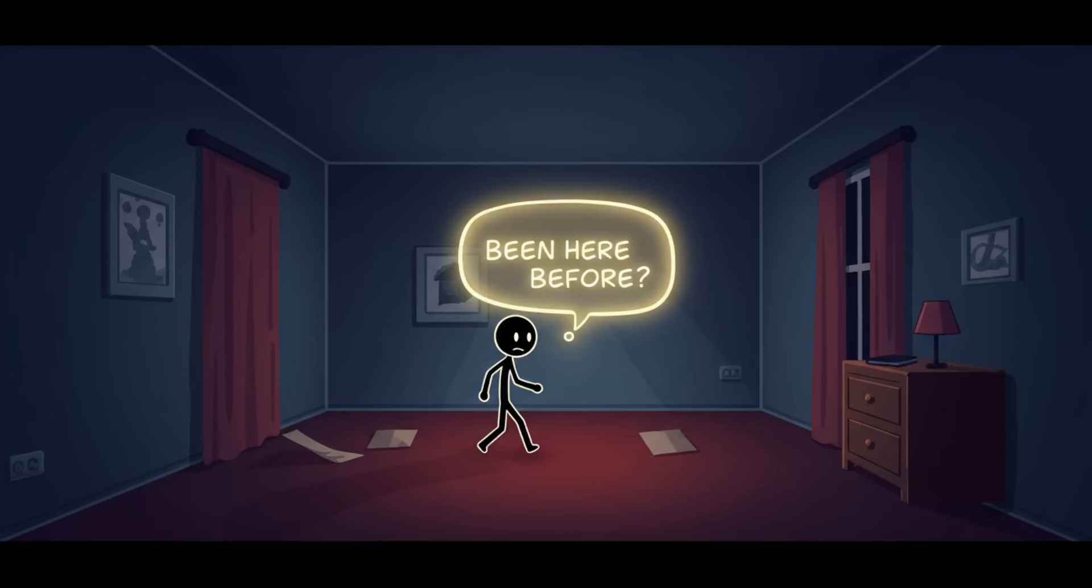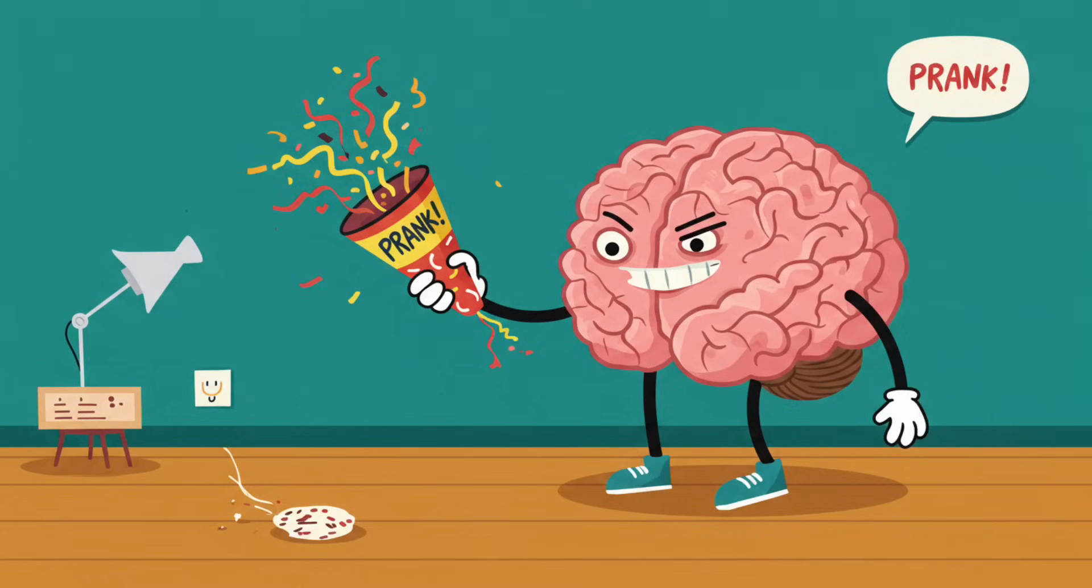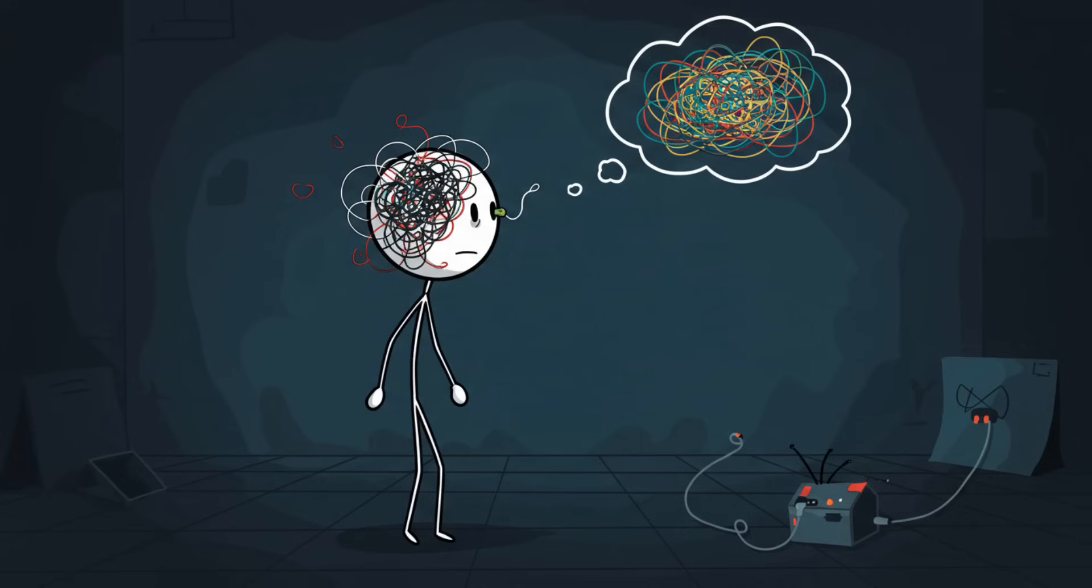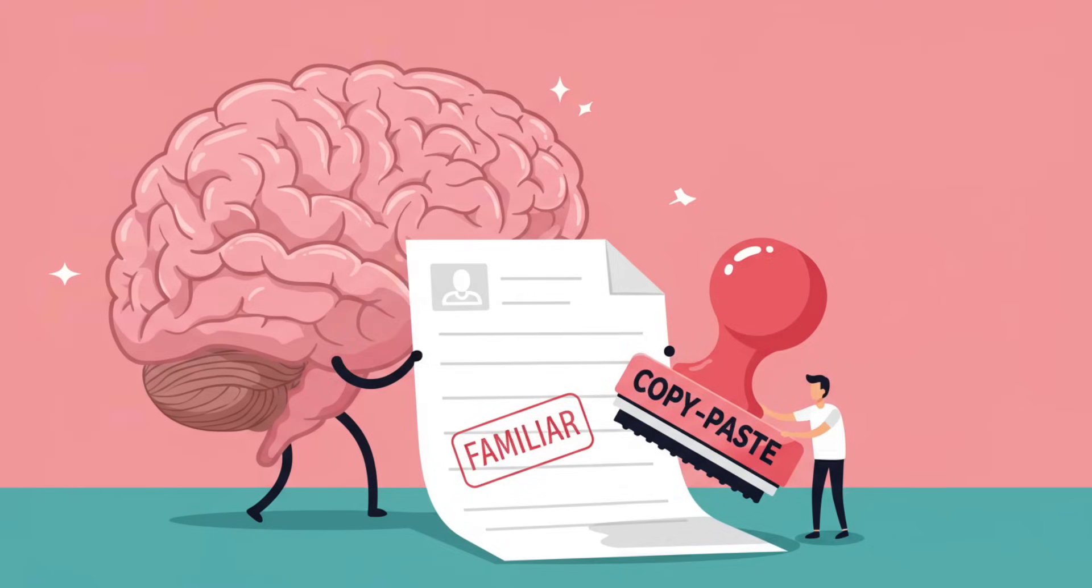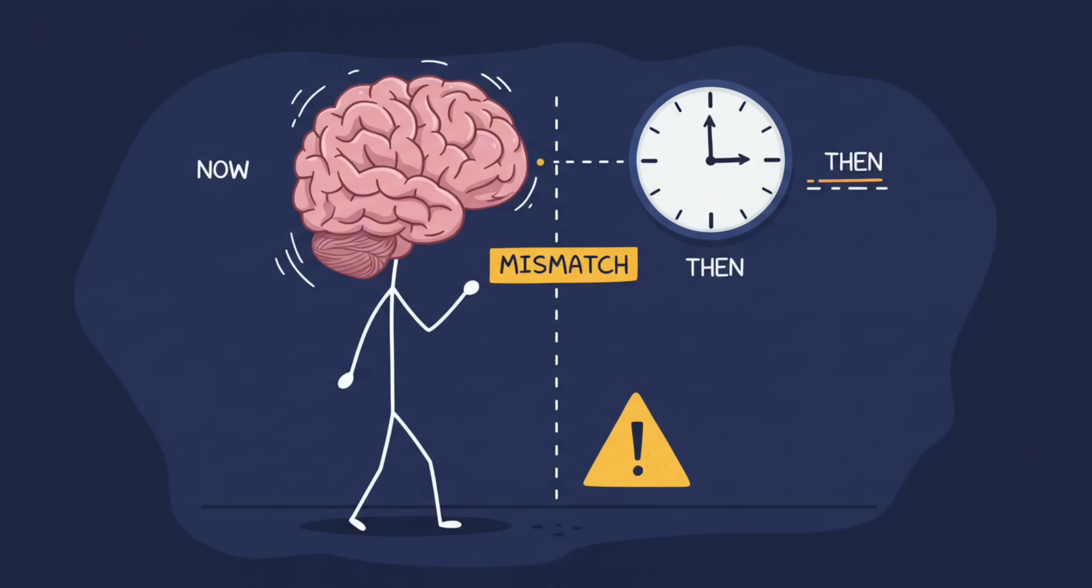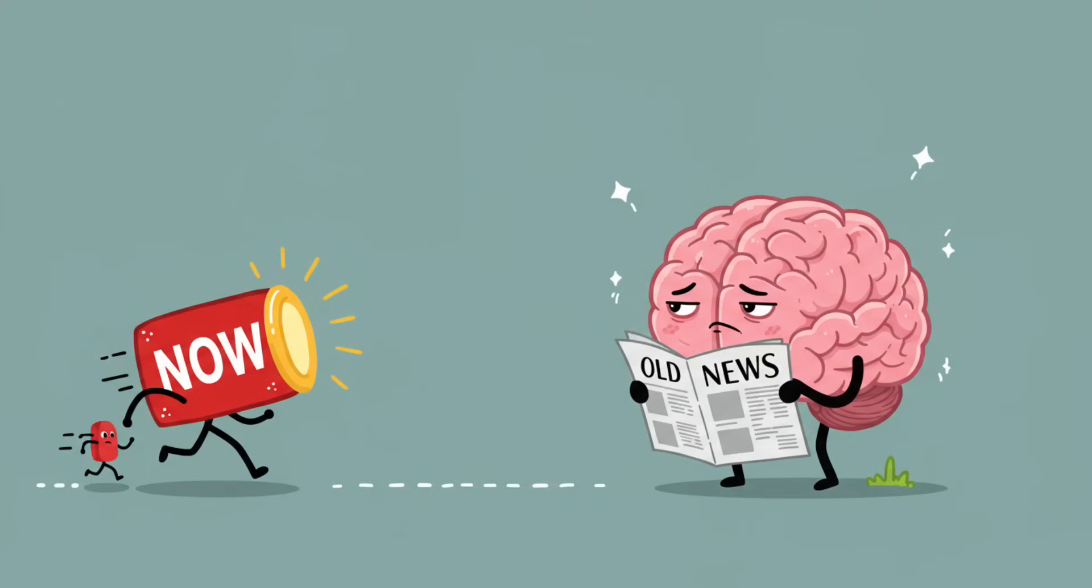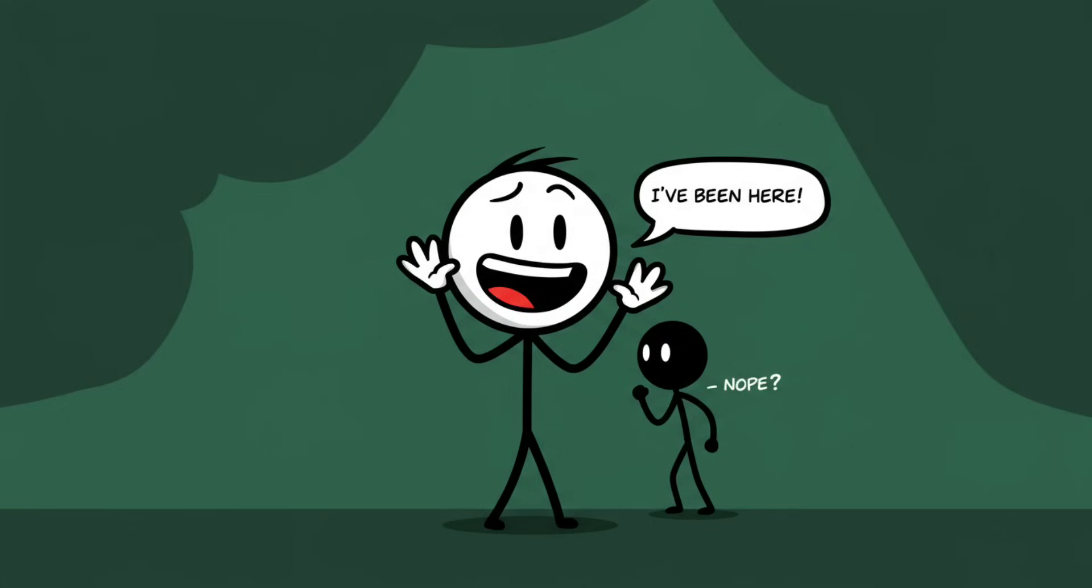Number three: déjà vu, your brain glitches out. Ever walked into a room and suddenly felt like you've been there before even though you haven't? Welcome to déjà vu, your brain's favorite little existential prank. Essentially, your memory circuits get slightly scrambled, creating the illusion of familiarity. It's like your hippocampus hit copy-paste on a memory you don't actually have. Neurologists think déjà vu happens when your brain experiences a tiny temporal mismatch between the sensory input it's currently receiving and the memory retrieval system. Basically the now signal arrives a few milliseconds late and your brain interprets it as old news. Your conscious self goes I've been here, while your subconscious whispers nope, you just hallucinated that.